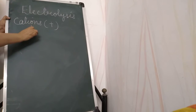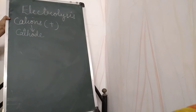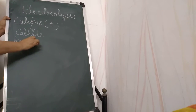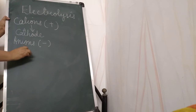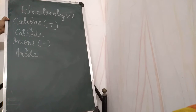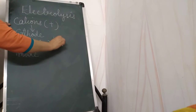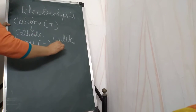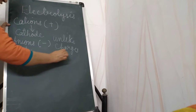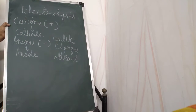Cations are attracted to the cathode. The negatively charged particles are known as anions, and they are attracted towards the anode. Unlike charges attract each other.